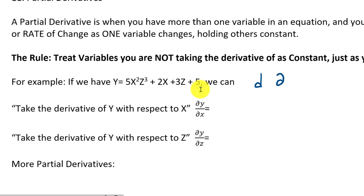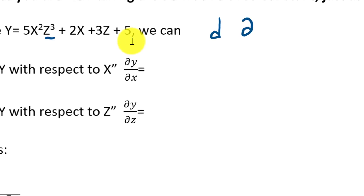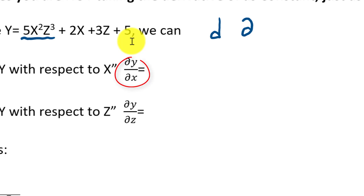Let's go step by step through each term. Starting with 5x²z³: since we're taking the derivative with respect to x, we take everything that is not the x term and treat it like a constant. That 5 is a constant, so we're not going to touch it. The z³ is also being treated like a constant — but since it's multiplied, we keep it. We just write down the 5 and the z³, carrying them along.